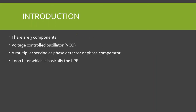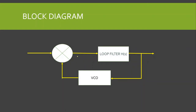There are three components of the phase lock loop: the voltage controlled oscillator, a multiplier which is also called the phase detector or phase comparator, and the loop filter which is basically a low pass filter. This is the block diagram of the phase lock loop. This is the multiplier or phase detector, this is the loop filter, and this is the voltage controlled oscillator.